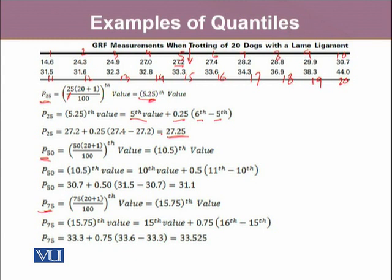In the similar way, this was done for the 50th percentile and 75th percentile, where we got 50th percentile is 10.5th value, where 10.5th value is after the 10th value and before the 11th value. So it turned out to be 31.1, which is apparently in the middle of 30.7 and 31.5, and similarly for the 75th percentile, it is some value between 15th observation and 16th observation, and this value turned out to be 33.525.